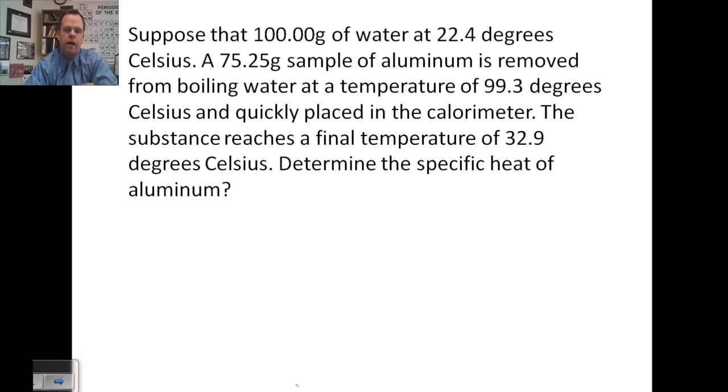Let's look at some example problems. Suppose 100 grams of water at 22.4 degrees Celsius, a 75.25 gram sample of aluminum is removed from boiling water at a temperature of 99.3 degrees Celsius and quickly placed in the calorimeter. It is stirred until a final temperature of 32.9 is reached. What is the specific heat of the aluminum?